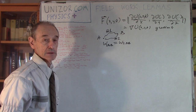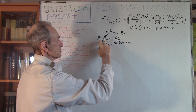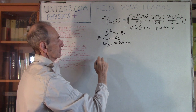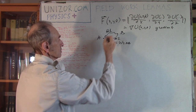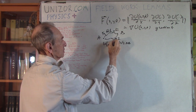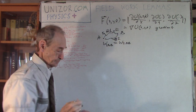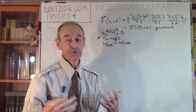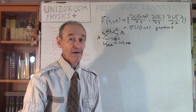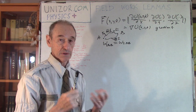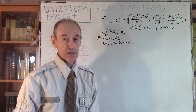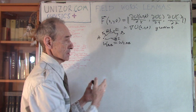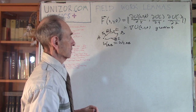The work depends only on the endpoints. The forces at every point are different, but the total work will be the same. We study these particular types of fields because the gravitational field and electromagnetic field are potential — meaning the force of gravity can be expressed as the gradient of gravitational potential, and the same applies to the electromagnetic field.